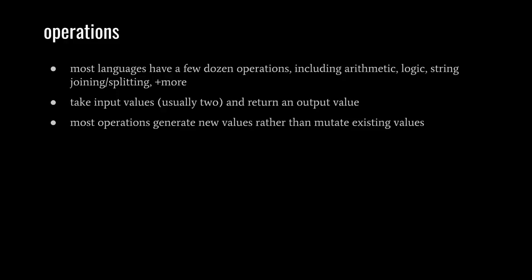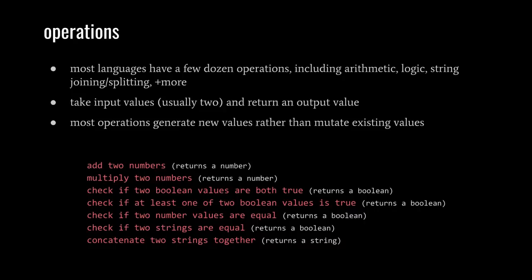Each of these operations, what they do is they take input values, usually two for most operations. They do something with those input values and return an output value. So examples include, most obviously arithmetic, where say we might add together two numbers and it returns a number, the sum of those two numbers. Or we might multiply two numbers, which then returns the product of those two numbers.